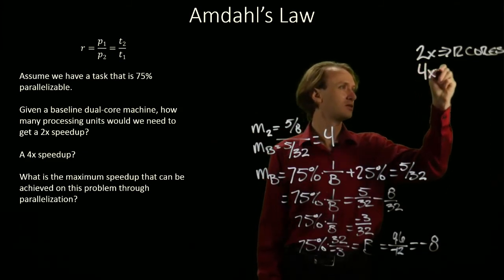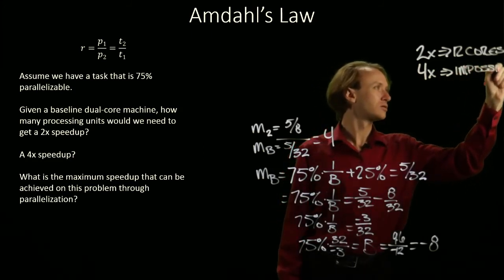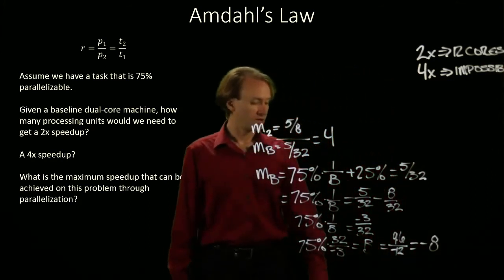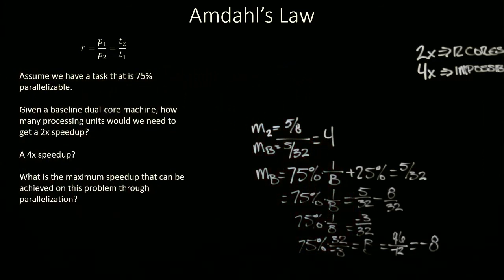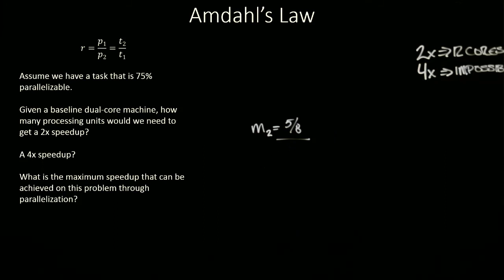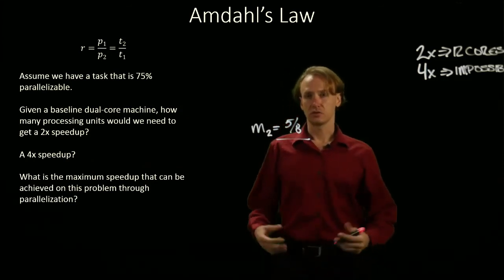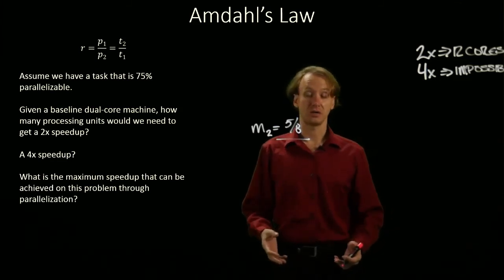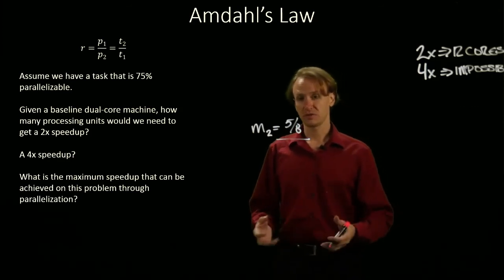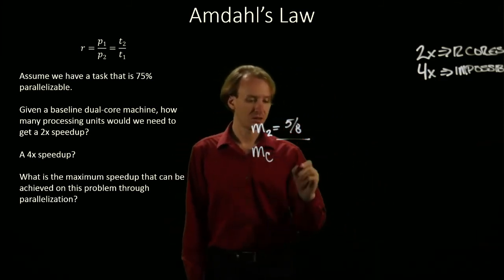So, we'll write down that I can't get a 4 times speedup. And then, next we'll look at, well, how much speedup can I get on this? So, in order to figure out how much speedup we can get, we're going to use the same formula. We're still just going to be looking at estimating our execution time.